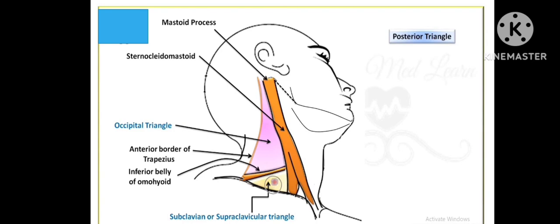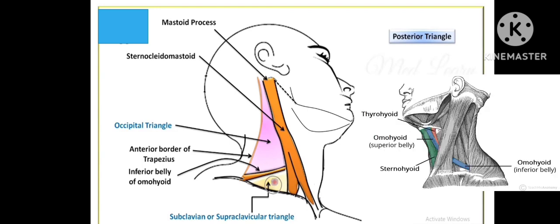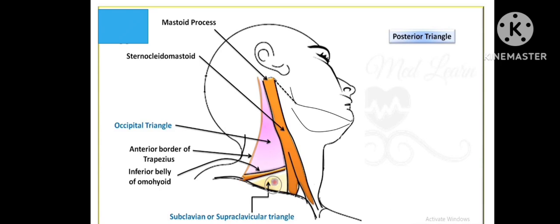Coming to the posterior triangle — in the posterior triangle, one muscle passes through it, that is the inferior belly of omohyoid. The inferior belly of omohyoid divides the posterior triangle into two sub-triangles: one is the occipital triangle and the other is the supraclavicular triangle, otherwise called the subclavian triangle.